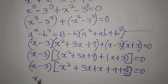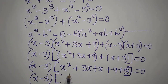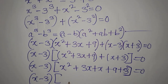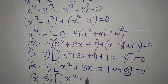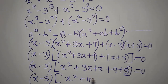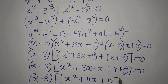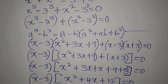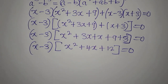So after factoring out (x minus 3), we simplify further to get (x minus 3)(x² plus 4x plus 12) equals zero. We are multiplying two terms to get zero, so we apply the zero product property.